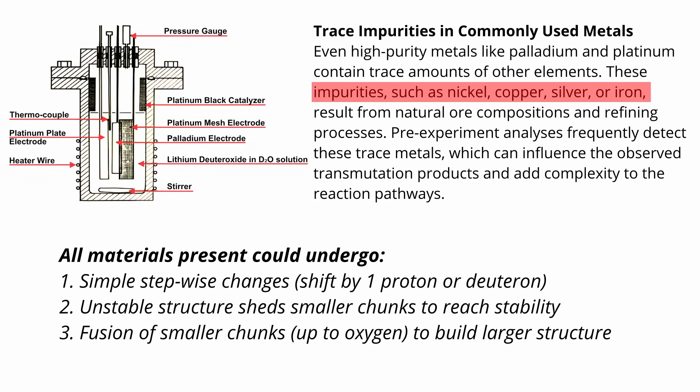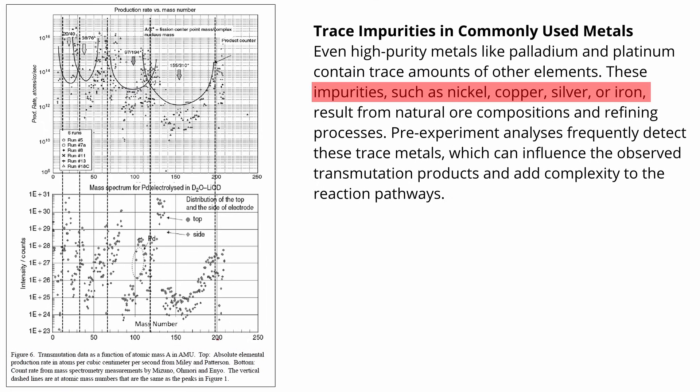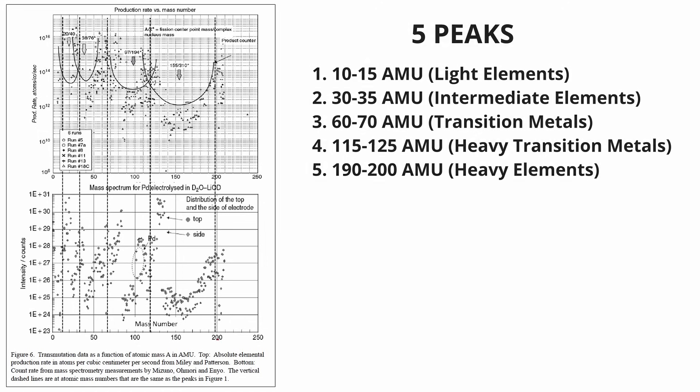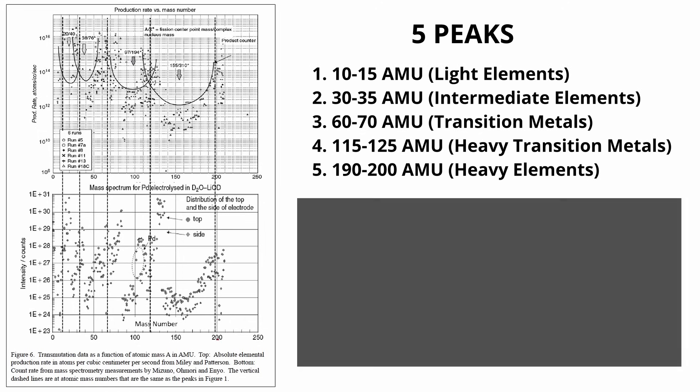Additionally, trace contaminants present in these metals can also experience minor isotopic changes, which may explain the spread of products around these peaks. Thus, the observed pattern arises from a combination of small changes in contaminant materials and the fusion and fission process involving palladium and platinum. Let's examine each peak to explore possible pathways that might have led to their formation.